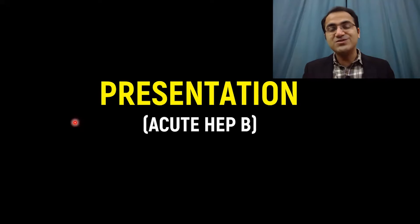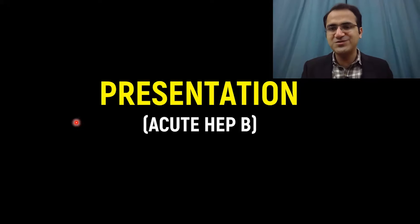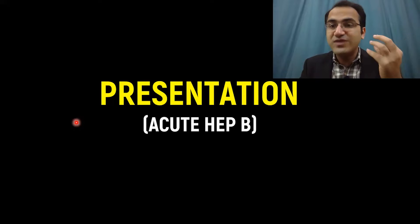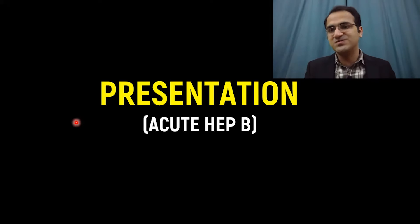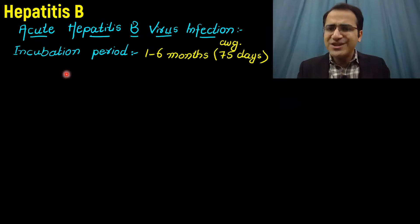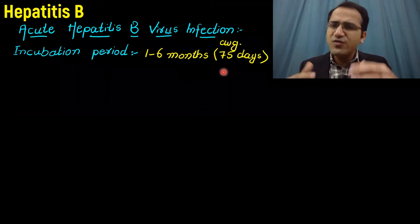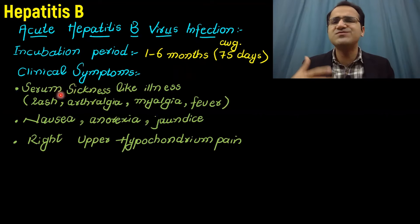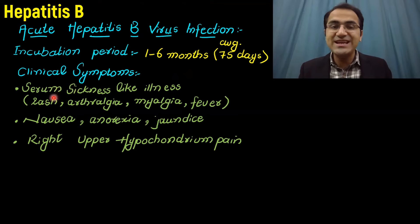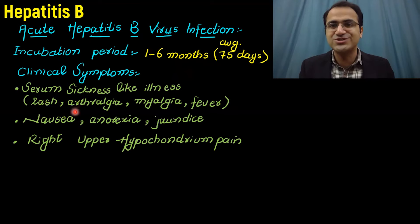The presentation of hepatitis B virus depends on whether the patient has acute or chronic infection. Acute hepatitis B lasts less than six months; greater than six months is chronic. The incubation period is one to six months, average 75 days. After 75 days, the patient starts to develop symptoms. Clinical symptoms include serum sickness-like illness, presenting as rash, arthralgia, myalgia, and fever — a non-specific presentation.